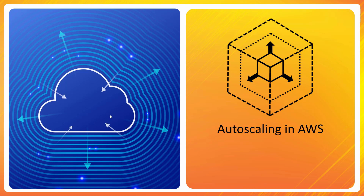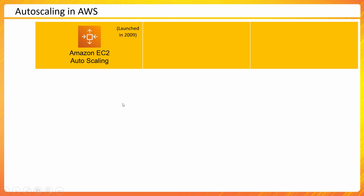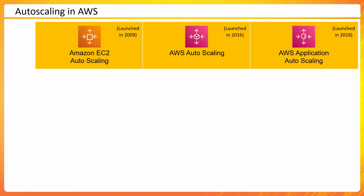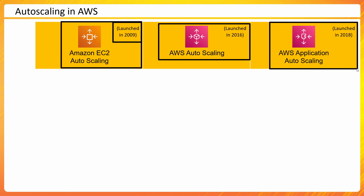Let's talk about auto scaling in AWS. This is a brief discussion about the capabilities AWS offers for different types of auto scaling, and we will see some of them in action in the coming sections. Auto scaling is a generic term used across various services in AWS. There are three major categories: Amazon EC2 Auto Scaling, AWS Auto Scaling, and AWS Application Auto Scaling. Amazon EC2 Auto Scaling is the most common one since it has existed for the longest time. AWS Auto Scaling was launched in 2016 and Application Auto Scaling in 2018.